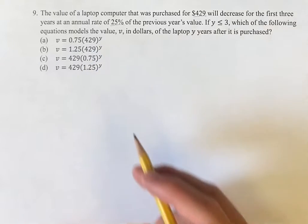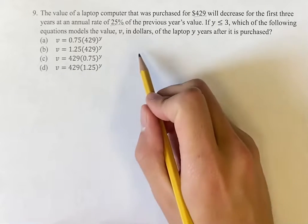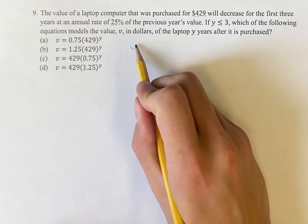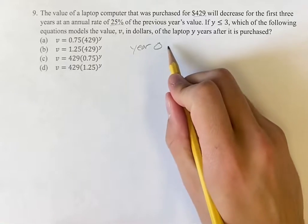So before we actually try and compare it to any of these equations, let's just look at what that looks like for the actual values of the three years. So for year zero, which we can think of as when we're purchasing it, it's going to be $429.